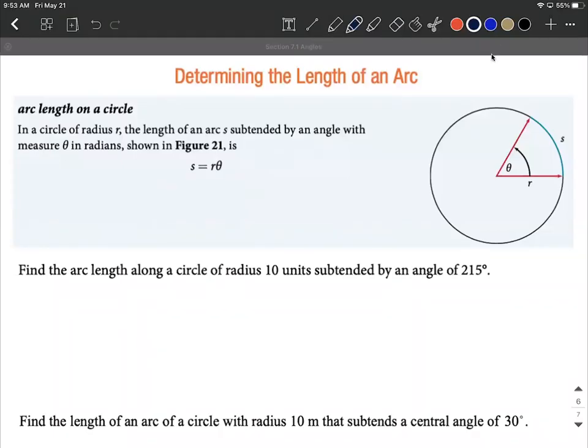Talking about arc length on a circle. In a circle of radius r, the length of the arc s subtended by an angle of measure θ in radians, shown in this figure on the right hand side, is given by s = rθ. The biggest thing is theta has to be measured in radians. Make sure that your angle is in radians as opposed to degrees.